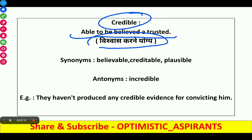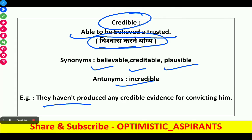Next word is credible. It means able to be believed or trusted. In Hindi it is 'vishwas karne yogya'. Synonyms are believable, creditable, or plausible. Antonyms are incredible. Example: 'They have not produced any credible evidence for convicting him.'